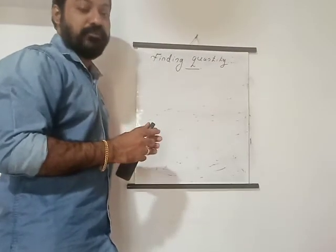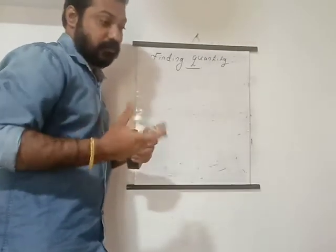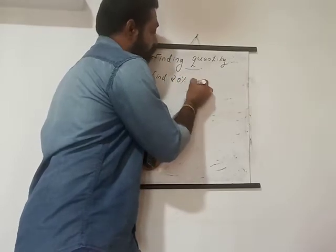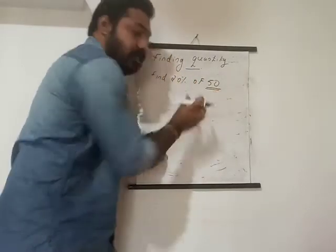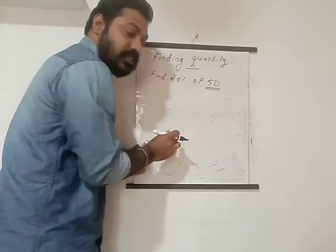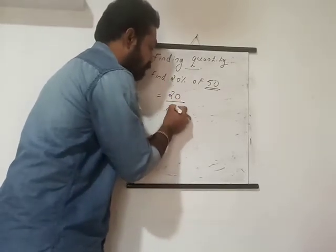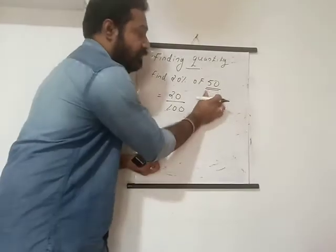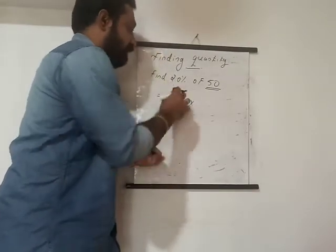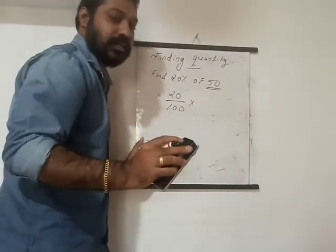So, finding quantity. How can we find a quantity? Let me write an example. The question is: find 20% of 50. You have to find out 20% of 50. 20% means we write 20 by 100. Of 50 means 20 by 100 into 50. So anything given as a percentage of a number means you write that percentage divided by 100, multiplied by the number.